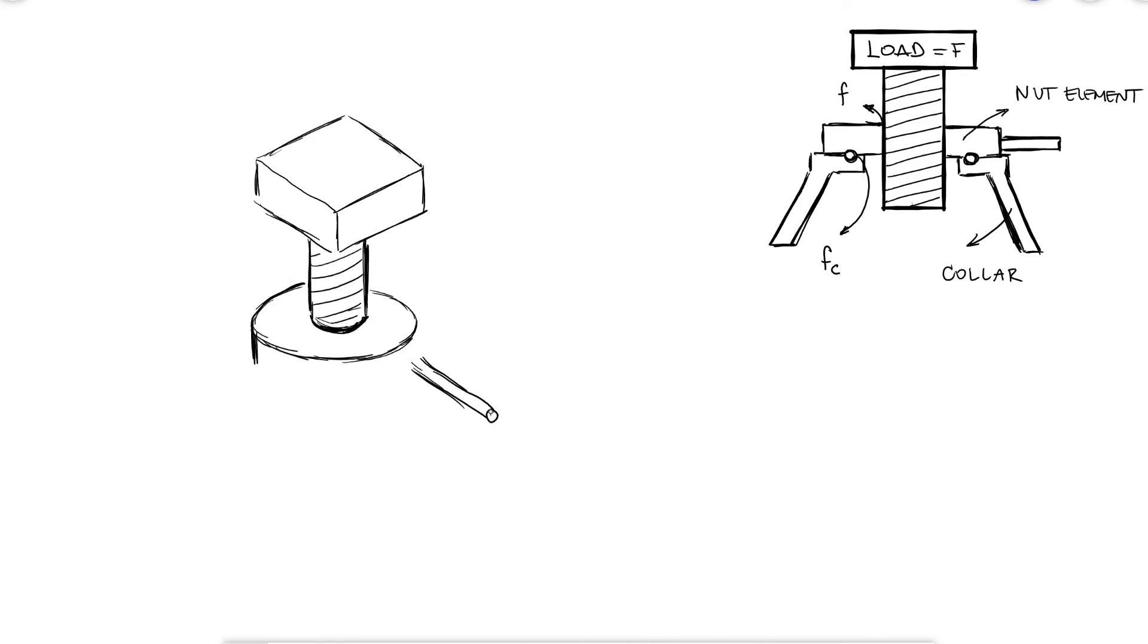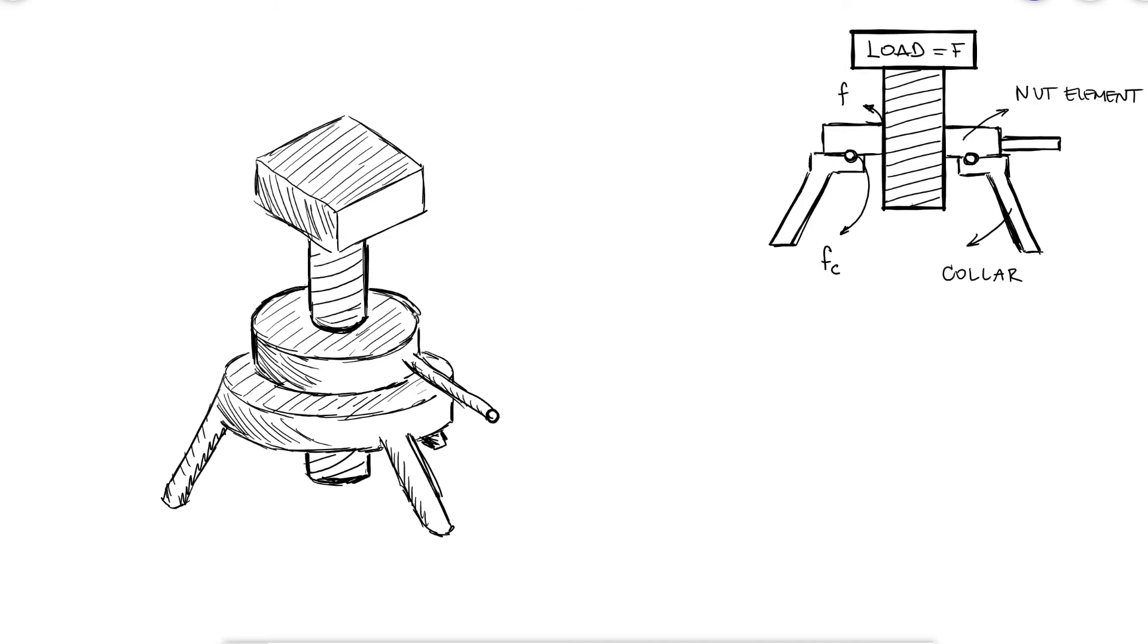As the input torque is generated on the nut, the torque has to overcome the friction between the nut and the collar and the friction at the threads to raise the opposing load.